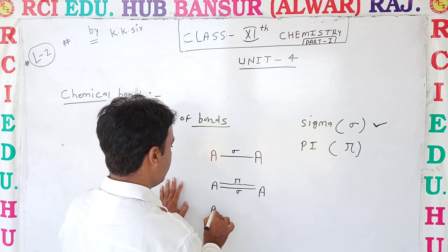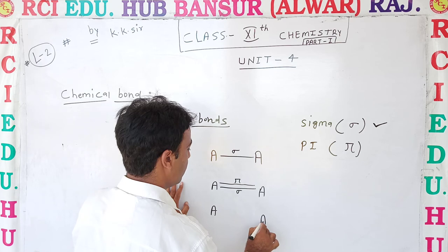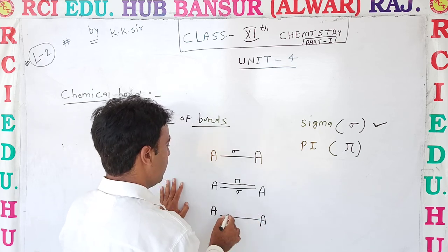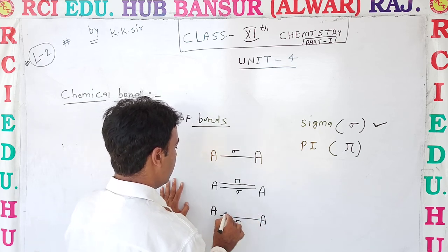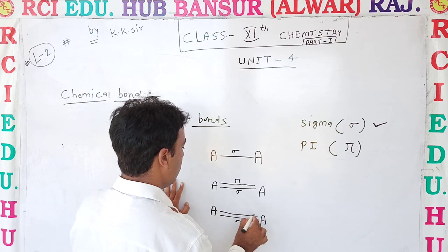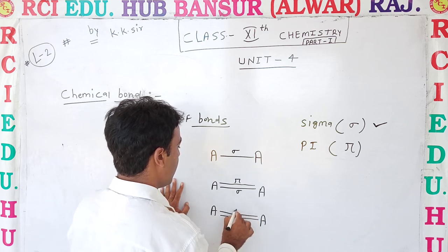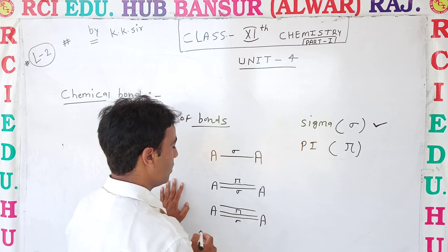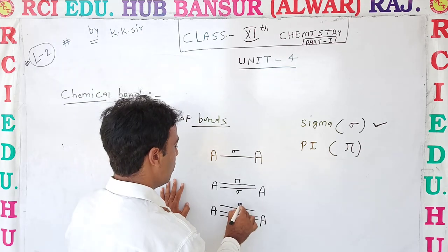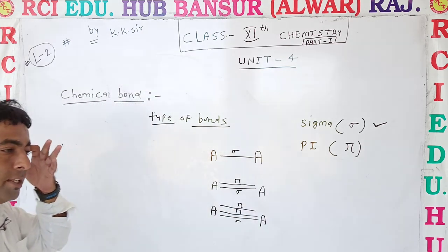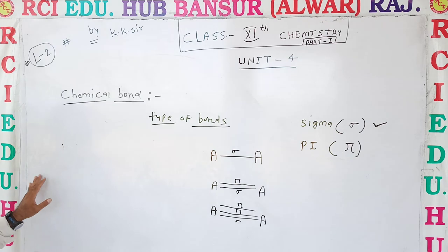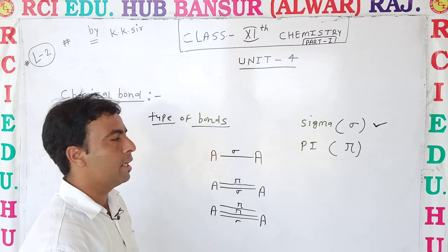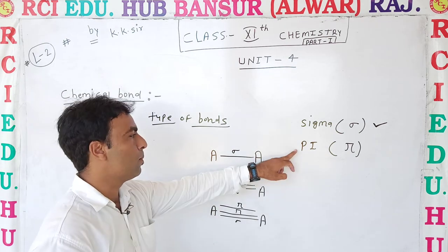If between atom A and atom A there are three lines, the first line is sigma, the second line is pi, and the third line drawn is also a pi bond. So sigma bond is the first bond formed, and any bond that comes after sigma is called a pi bond. First is sigma bond, second is pi bond.